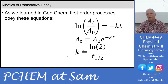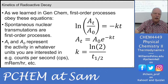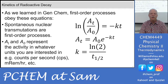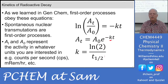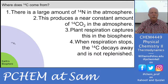First-order processes obey these equations — spontaneous nuclear transmutations are first-order. Activity A(t) and A(0) are just the activity in whatever units you're interested in — counts per second, millirem per hour — as long as both A's have the same units. There's the decay rate constant k, which is inversely proportional to the half-life. The half-life is the natural log of two over k. If you have a table of k values you can get half-lives, and vice versa.